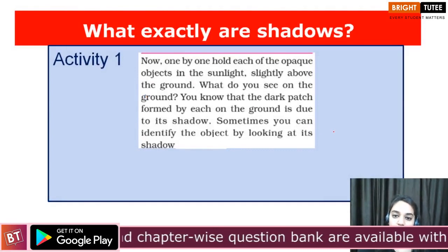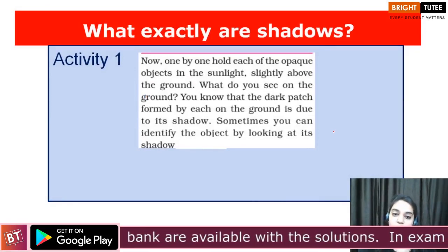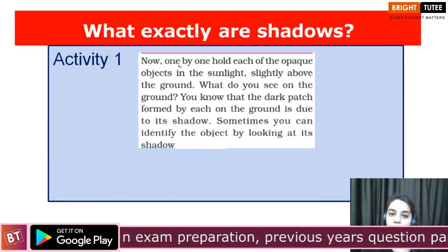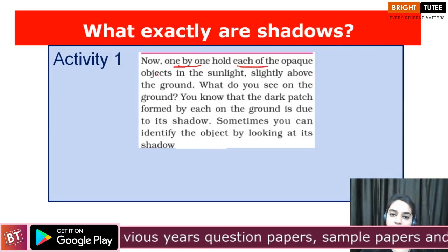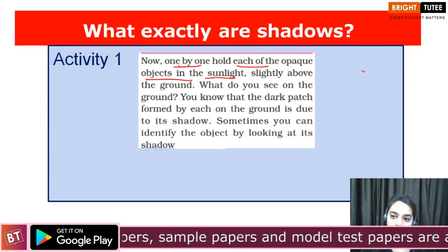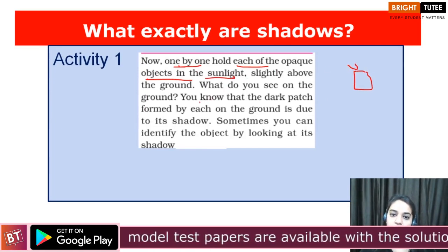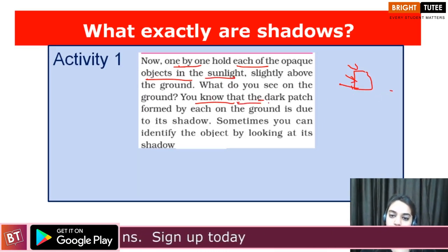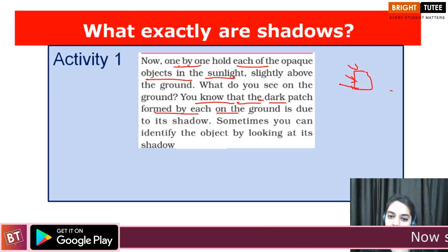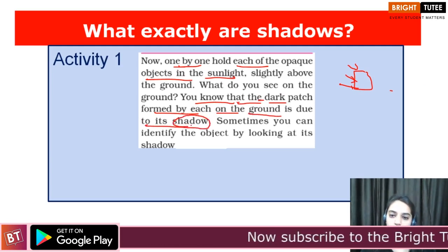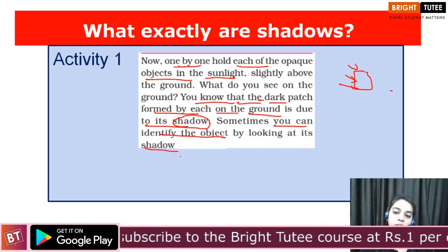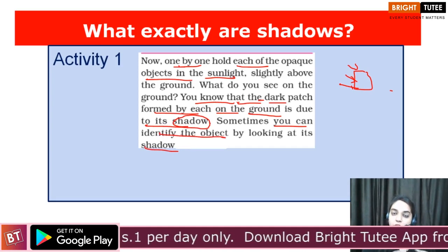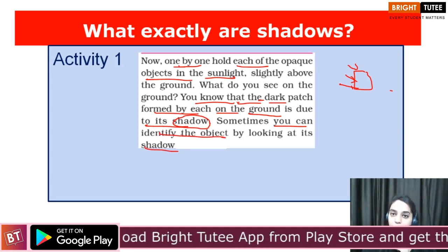Now we are going to conduct an activity to understand the formation of shadows a little more deeply. What you are going to do is hold each of the opaque objects in the sunlight one by one and observe its shadow. The dark patch formed by each opaque object on the ground is its shadow. Sometimes you can identify the objects just by looking at their shadow, because the shape of the shadow gives us the basic idea about the shape of the object.